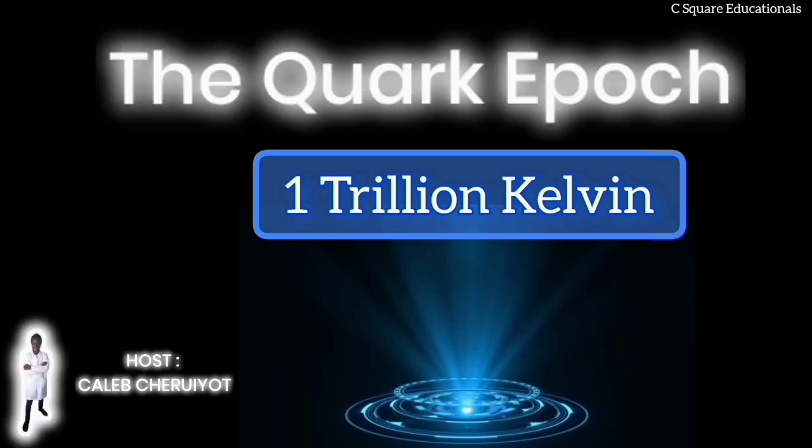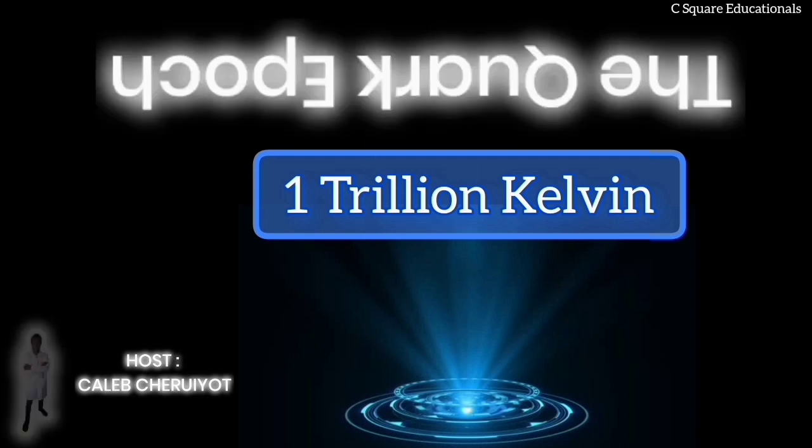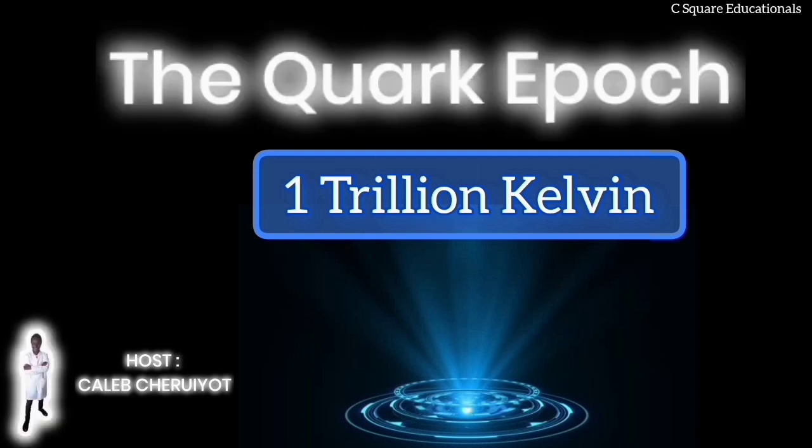The annihilation process culminates with the lepton epoch, which occurs around 1 second mark when the temperatures subside to about 5 billion Kelvin. During this epoch, leptons conclude the annihilation process. Following this remarkable display, the majority of the matter particles transform into photons and neutrinos. However, due to the matter-antimatter asymmetry, a small quantity of protons, neutrons, and electrons remain, surviving as the fundamental building blocks for atoms.